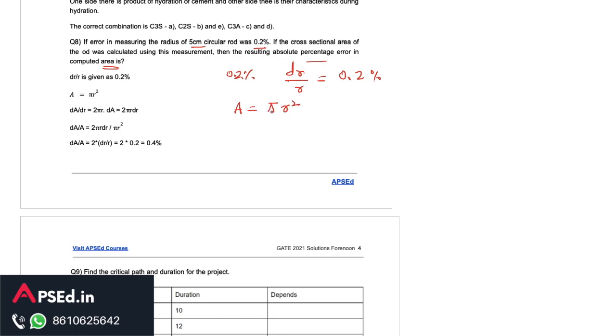Area we know is given as pi r square and from that we can calculate this differential da is equal to 2 pi r dr. Because we have to calculate the percentage error here so we can divide it by area, so on right hand side also by pi r square. R will cancel out, this pi will cancel out and we are left with 2 dr upon r and we know the value of dr upon r as 0.2 percent so this da upon a will be 0.4 percent. So that will be the resulting error in the area.